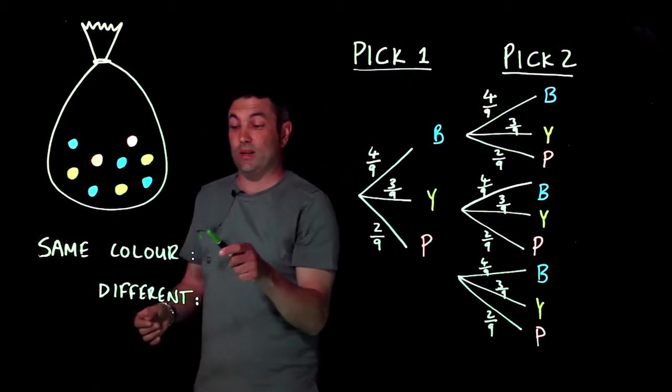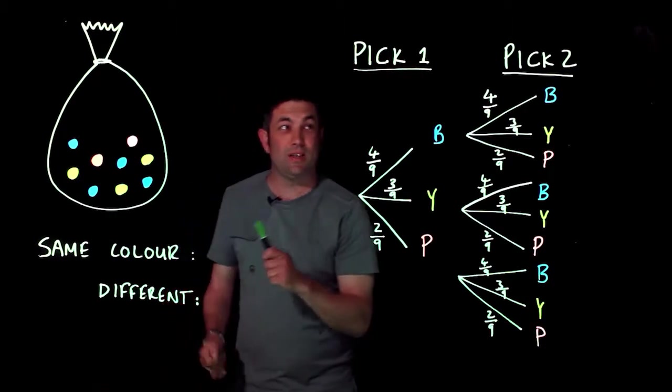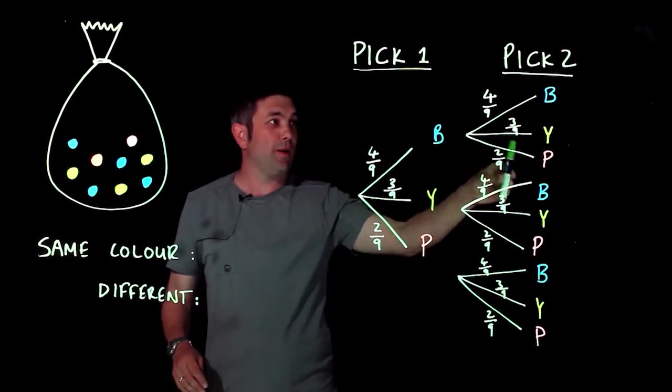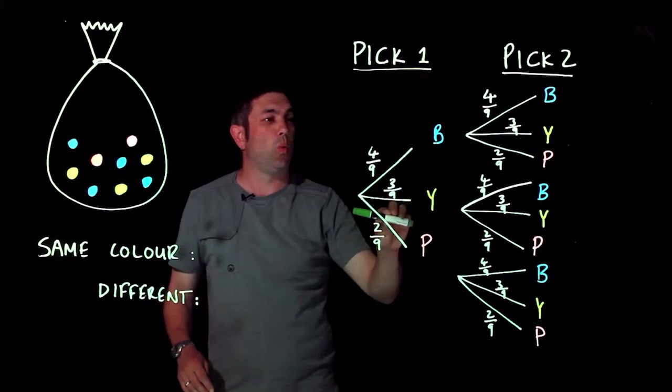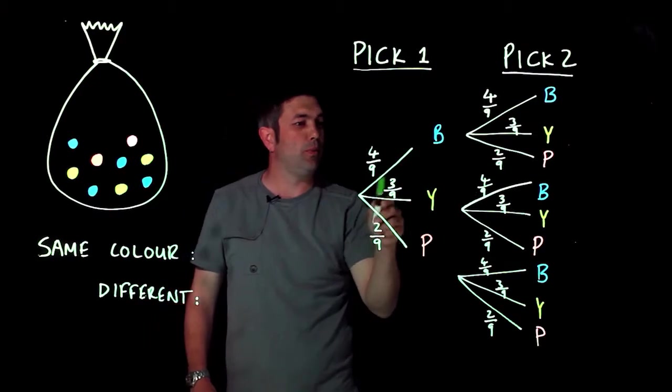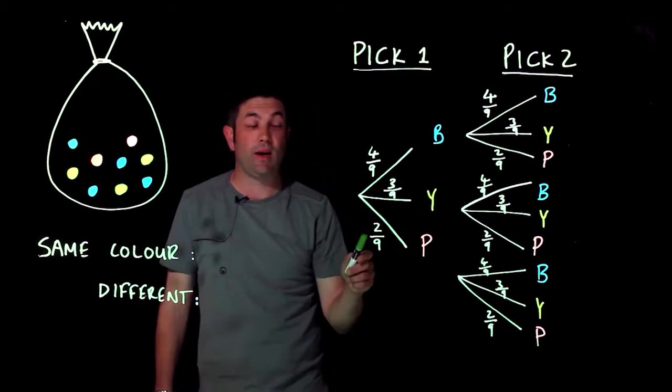So we're going to find the probability of getting the same color and the probability of finding two different colors. Okay, now I've done a little tree diagram here to help us where pick one, probability of blue is four out of nine. There are four blues, nine counters in total. Probability of yellow is three out of nine.